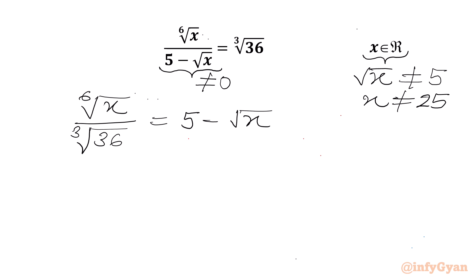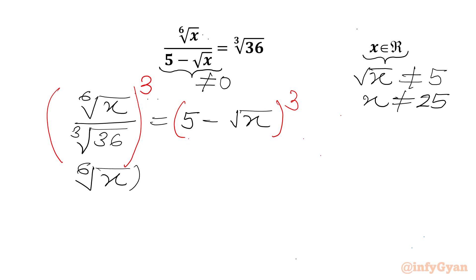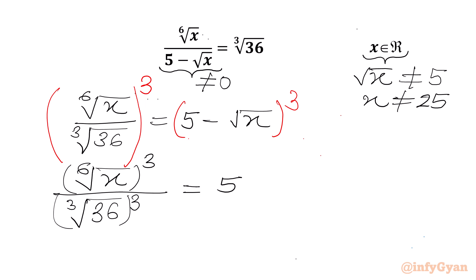Now we will consider cubing both sides, as we have a 6th root and cube root in the LHS. I will split numerator and denominator with power: 6th root of x whole cube in the numerator, over cube root of 36 whole cube in the denominator, equal to (5 minus square root x) whole cube.